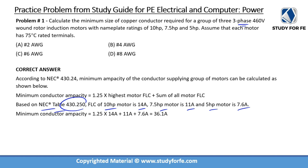Once you have verified them, it's a simple plug-and-play. So: 1.25 times 14 amps, plus 11 amps, plus 7.6 amps — which is simply the sum of the remaining motor FLCs — and that gives us a total of 36.1 amps.